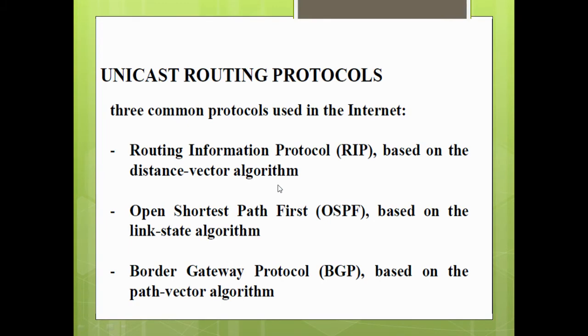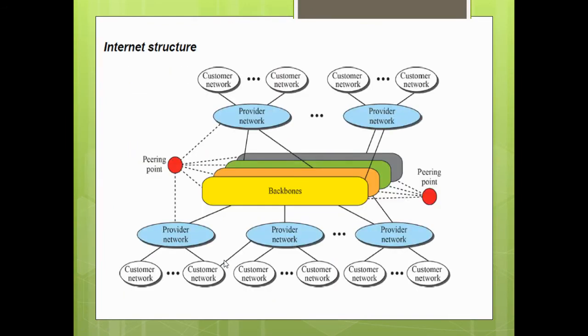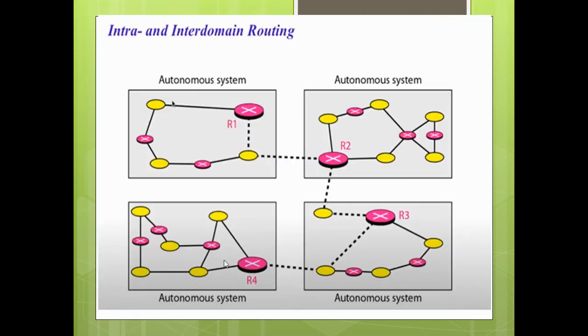So this is why based on what the system is, we will have a specific solution inside the system. Solution in the sense different technologies, different routing protocols. So to make this thing easy, we will identify each one of these systems as an autonomous system.